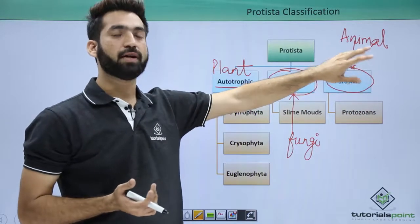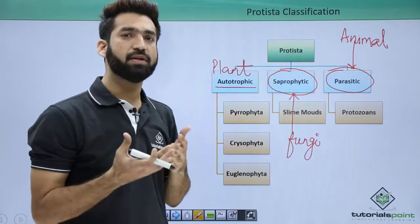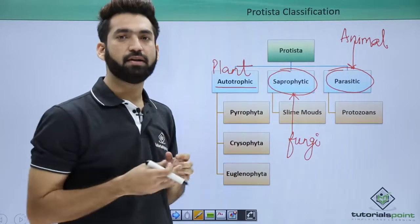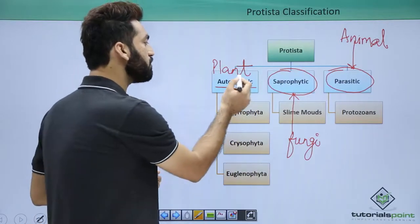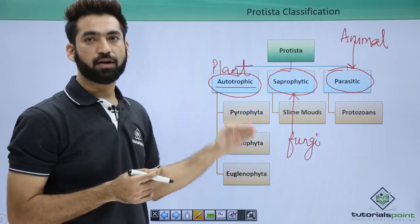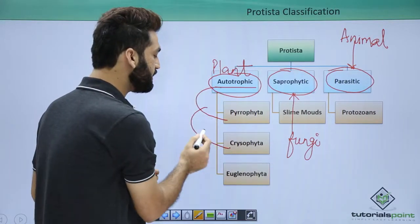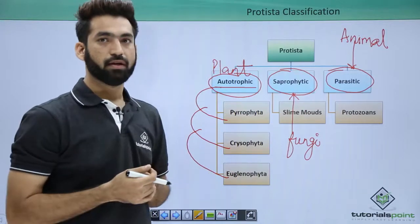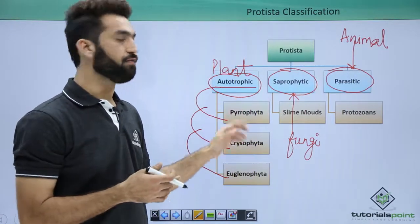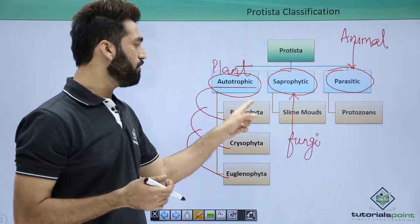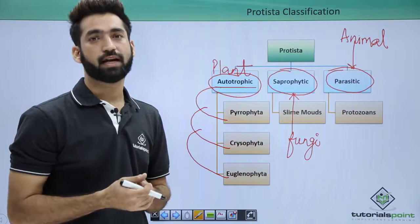The boundaries of this kingdom are not well defined. They are the connecting link between Kingdom Monera — being unicellular — and the other three kingdoms being eukaryotes. When talking about the autotrophic mode of nutrition, we need to discuss three types of Protista: Pyrophyta, Chrysophyta, and Euglenophyta.